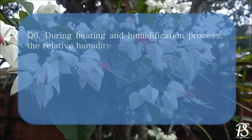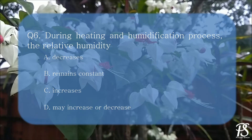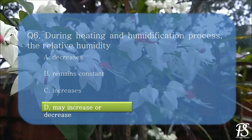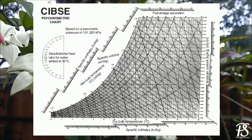During a heating and humidification process, the relative humidity: A. decreases, B. remains constant, C. increases, or D. may increase or decrease. The correct answer is D — it may increase or decrease. To understand this, let us go back to the psychrometric chart. For process 1-2 (a heating and humidification process), point 2 is further away from the saturation line, meaning relative humidity decreases. But for another heating and humidification process 1-3, point 3 is closer to the saturation line, so relative humidity increases. Thus, relative humidity may increase or decrease during heating and humidification.